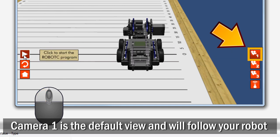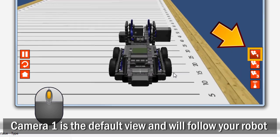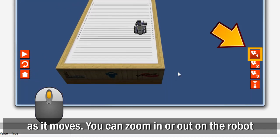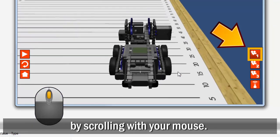Camera 1 is the default view and will follow your robot as it moves. You can zoom in or out on the robot by scrolling with your mouse.